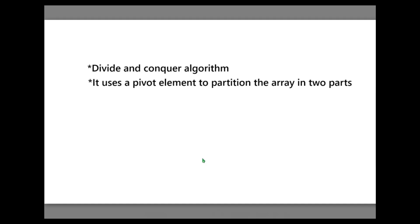It uses a pivot element to partition the array into two parts. There are many ways to find the pivot — we can take the first element as pivot, or the middle element as pivot, or the last element as pivot.